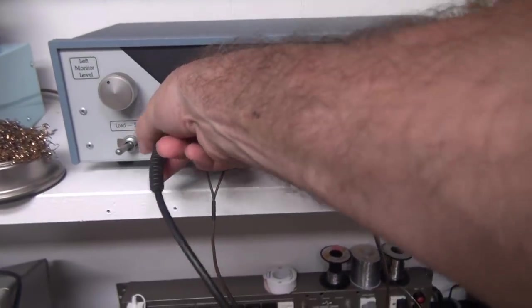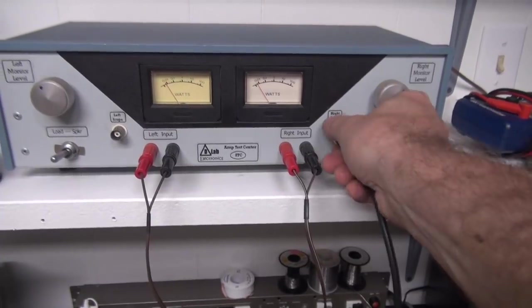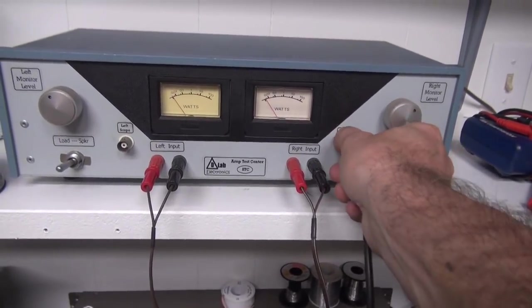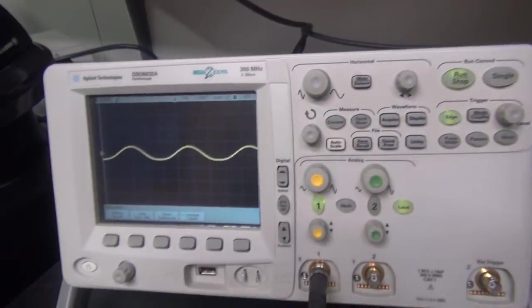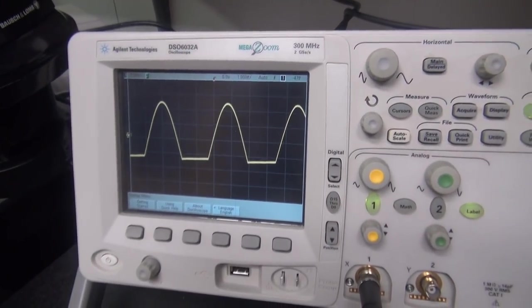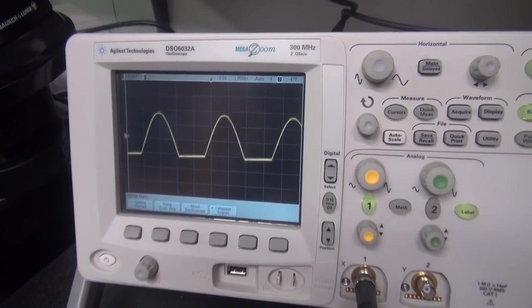Now let's flip our scope and monitor the right channel. This is the channel that has the distortion. So here we go. Bring her up. You can see it's clipped.